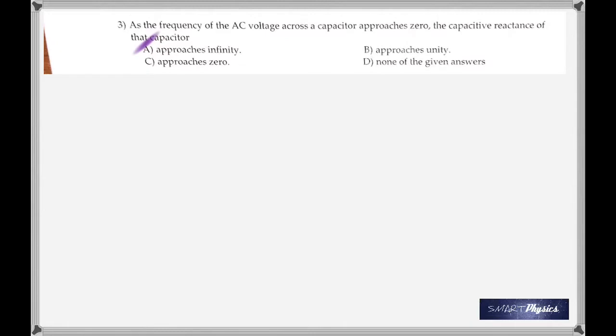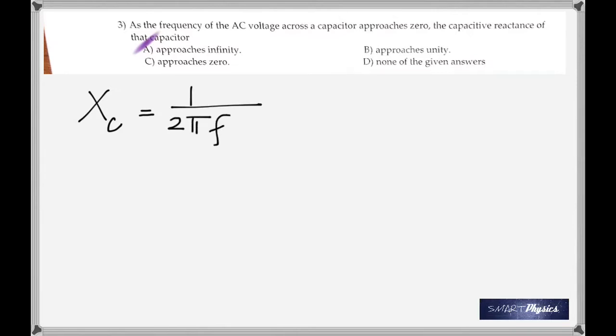As the frequency of the AC voltage across a capacitor approaches zero, the capacitive reactance of that capacitor: the capacitive reactance XC is given by 1 divided by 2πfC. When f tends to zero, XC tends to infinity — so XC approaches infinity.